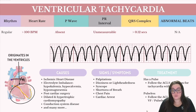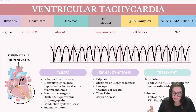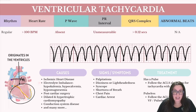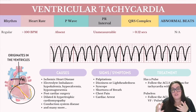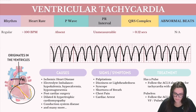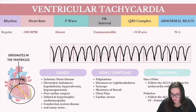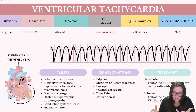Common causes of ventricular tachycardia include idiopathic onset where we really don't know the reason, ischemic heart disease, electrolyte imbalances such as hypokalemia, hypocalcemia, and hypomagnesemia. Post-cardiac surgery is another cause, as is dilated and hypertrophic cardiomyopathy, and conduction system diseases affecting the electrical pathways of the heart. There are obviously many more causes, but these are some of the most common.